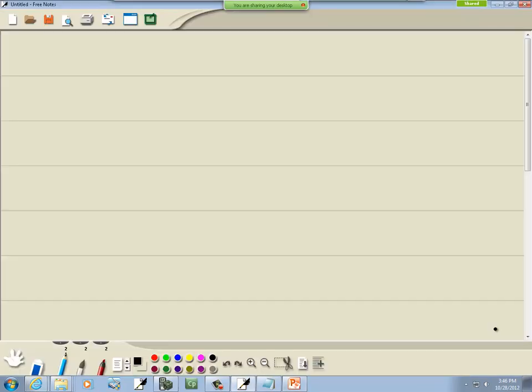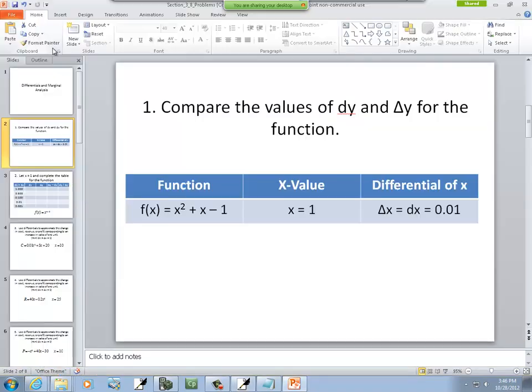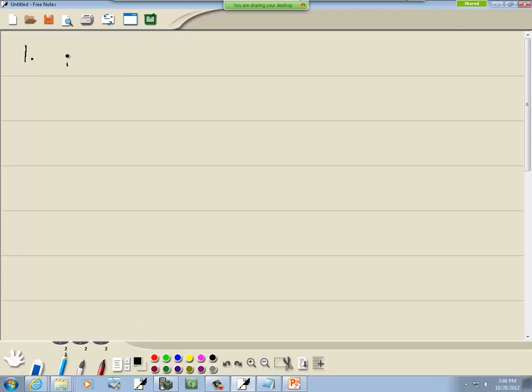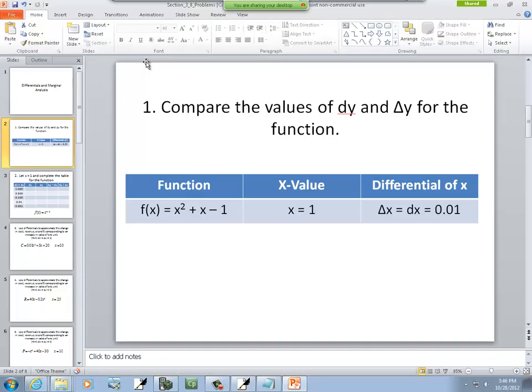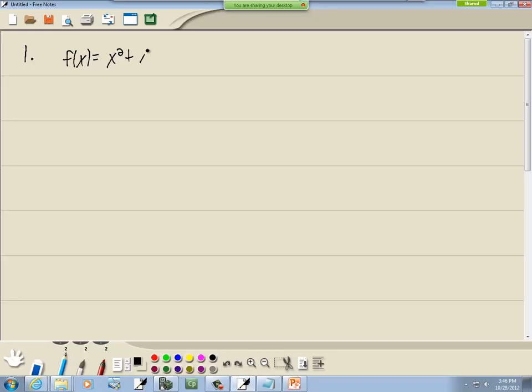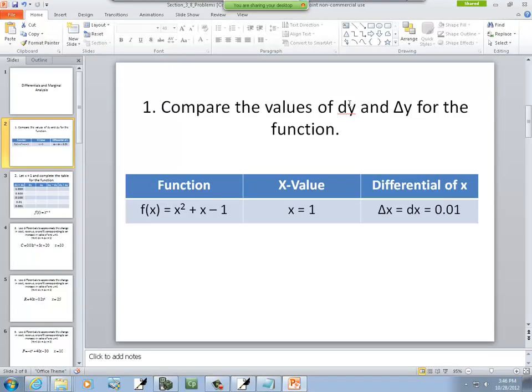Our first problem will be, compare the values of dy and delta y for the function. So we've got f(x) is equal to x squared plus x minus 1. Now, the difference between dy and delta y. dy is our calculus-based, and delta y is just algebraic-based.